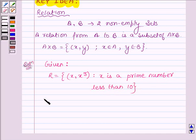That is, R is a relation having ordered pair (x, x³) such that x has values 2, 3, 5, and 7.